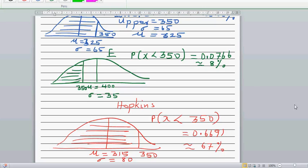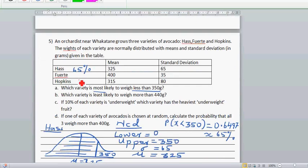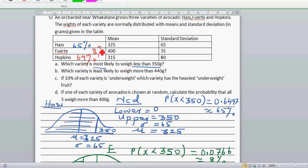So you got 65 percent for Hass, then you got 8 percent for Fuerte, and Hopkins was 67 percent. Which is most likely to weigh less than 350? The answer is Hopkins. Because Hopkins variety, the probability that the avocados would weigh less than 350 grams is 67 percent.